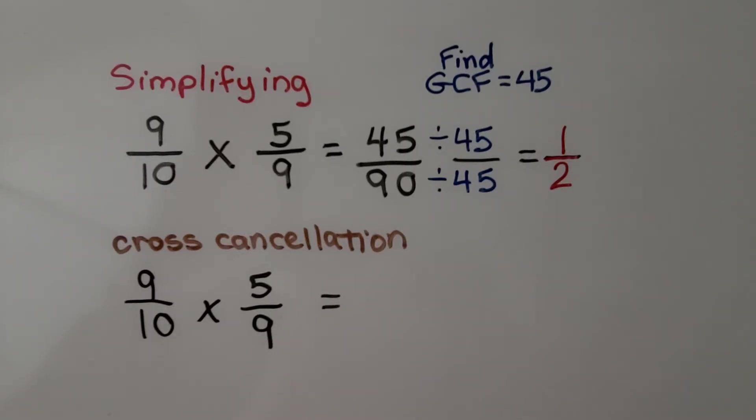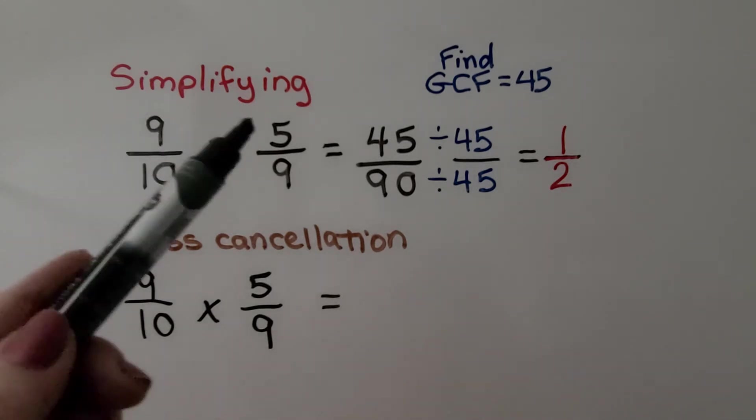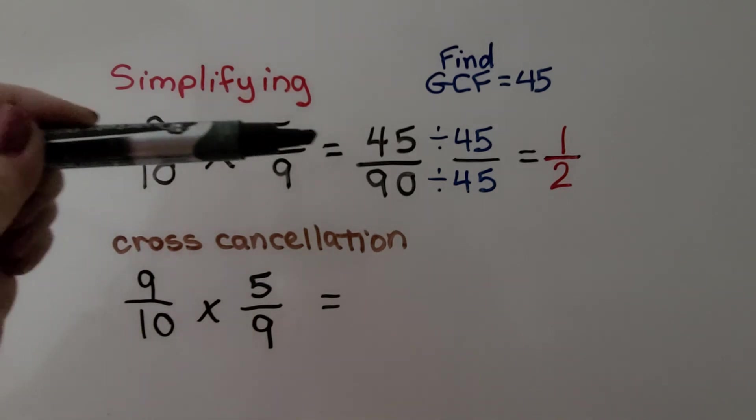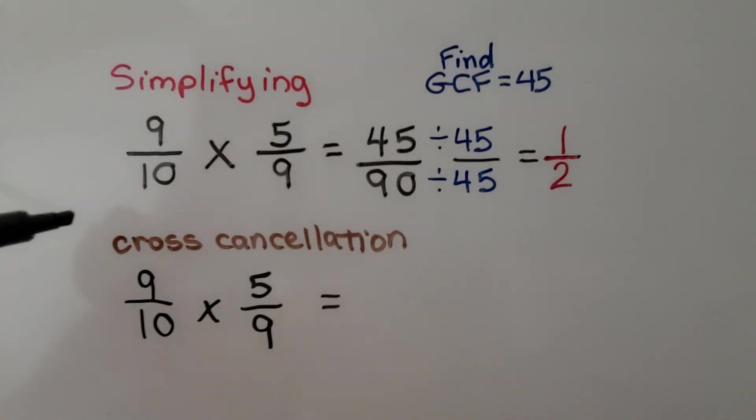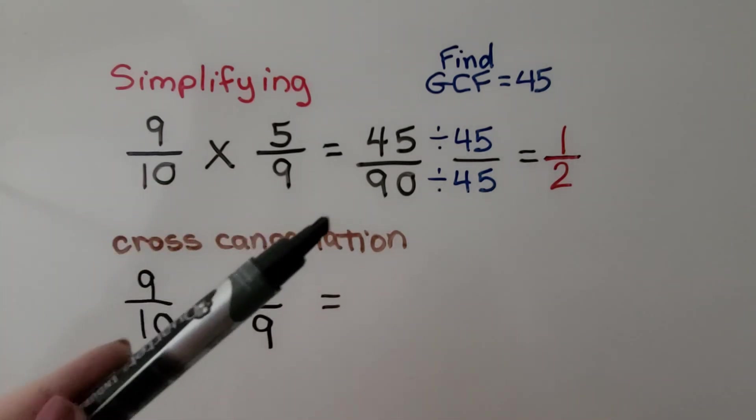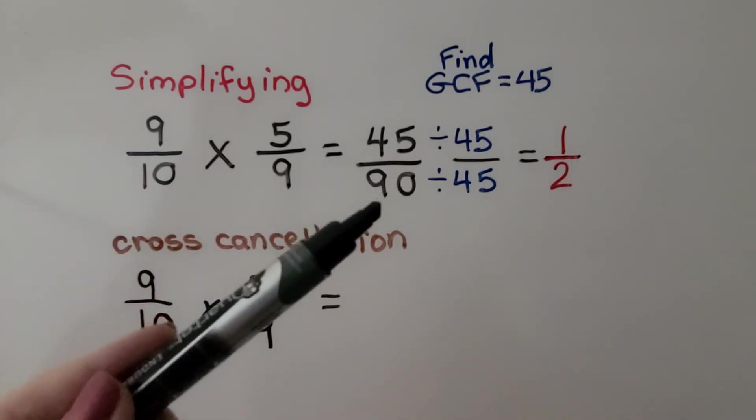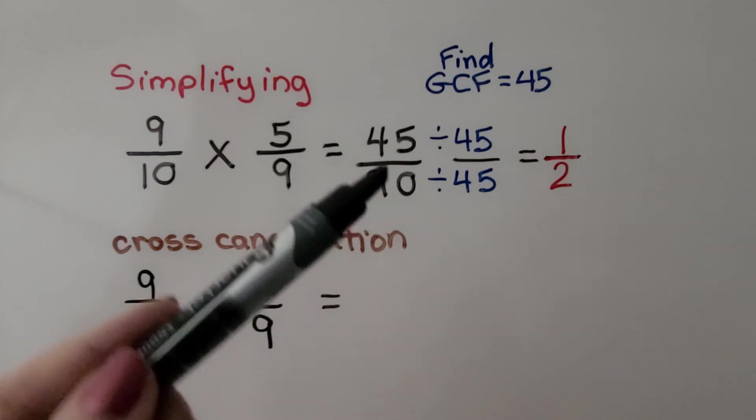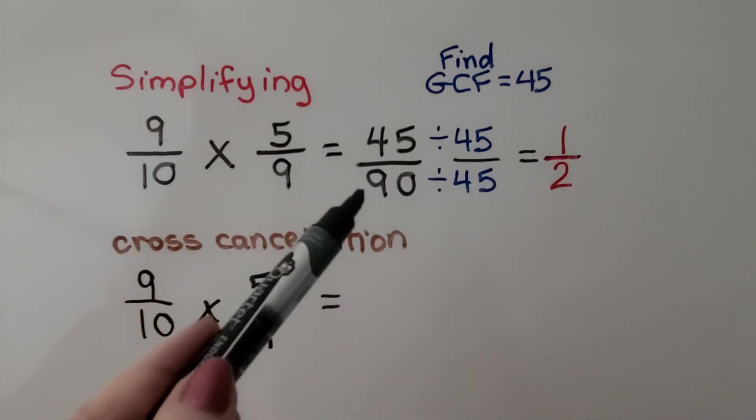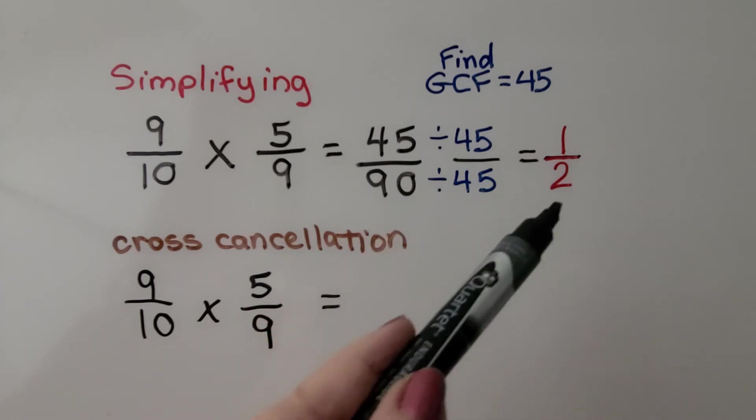I have a couple of examples comparing multiplying straight across and simplifying versus cross cancellation. Here we have 9 tenths times 5 ninths. We multiply straight across. 9 times 5 is 45. Then we do the denominators. 10 times 9 is 90. Now we need to find that their GCF is 45. If we divide 45 by 45, we get 1. And if we divide 90 by 45, we get 2.